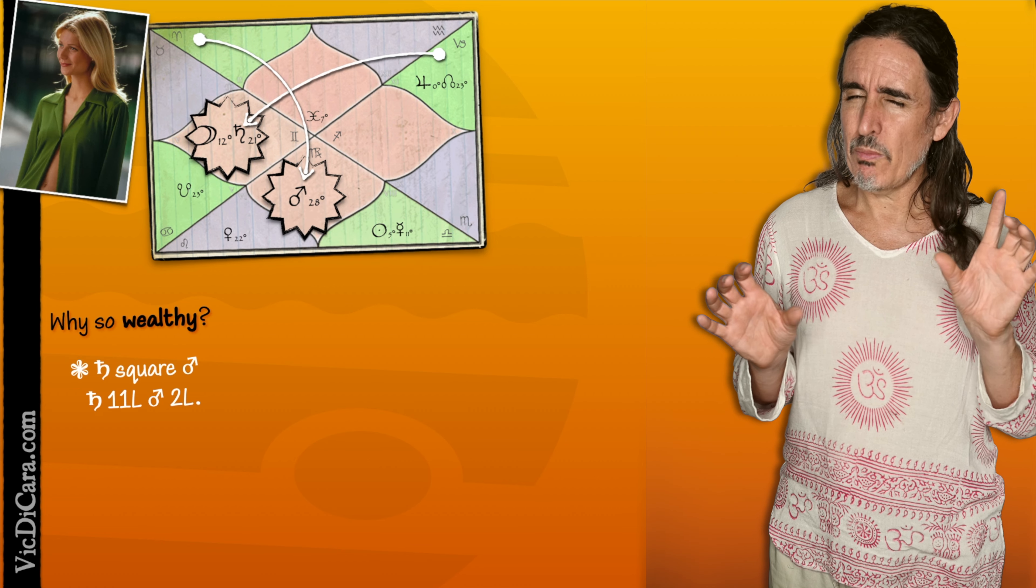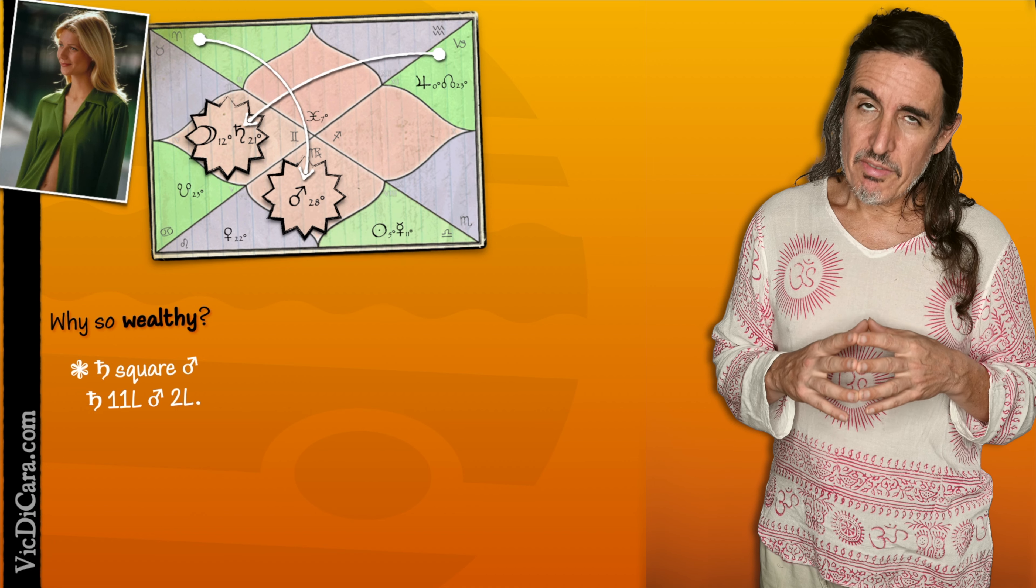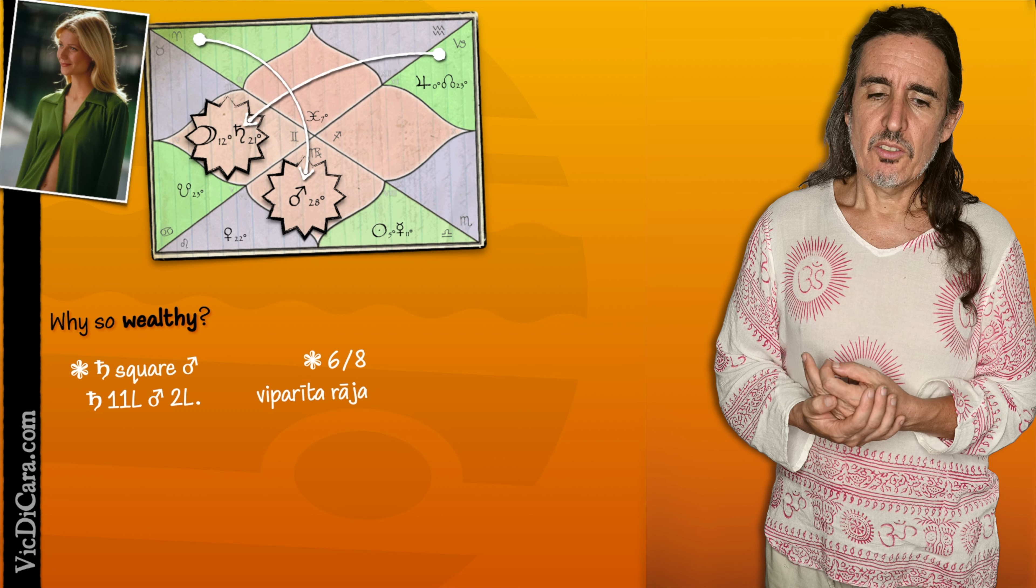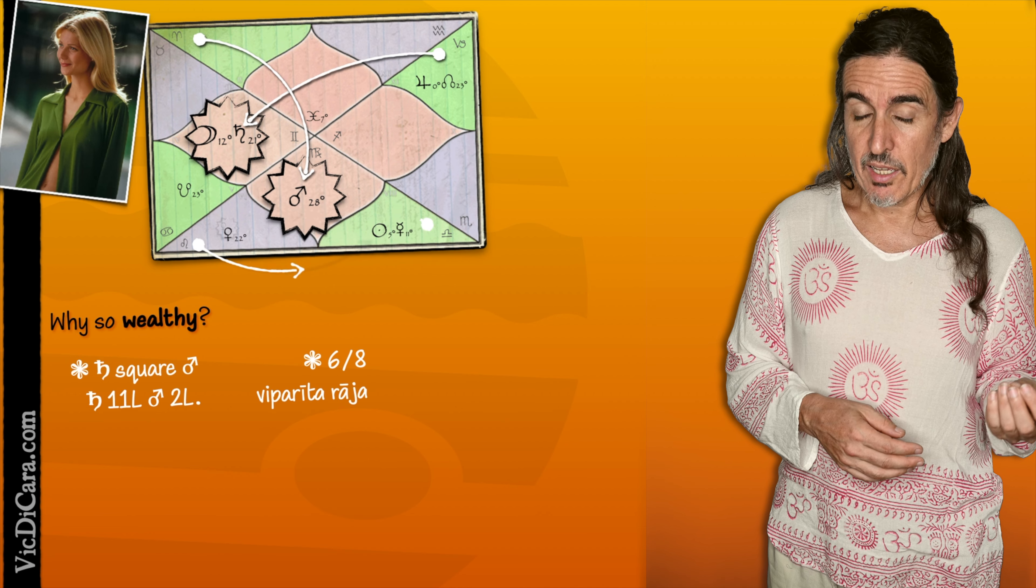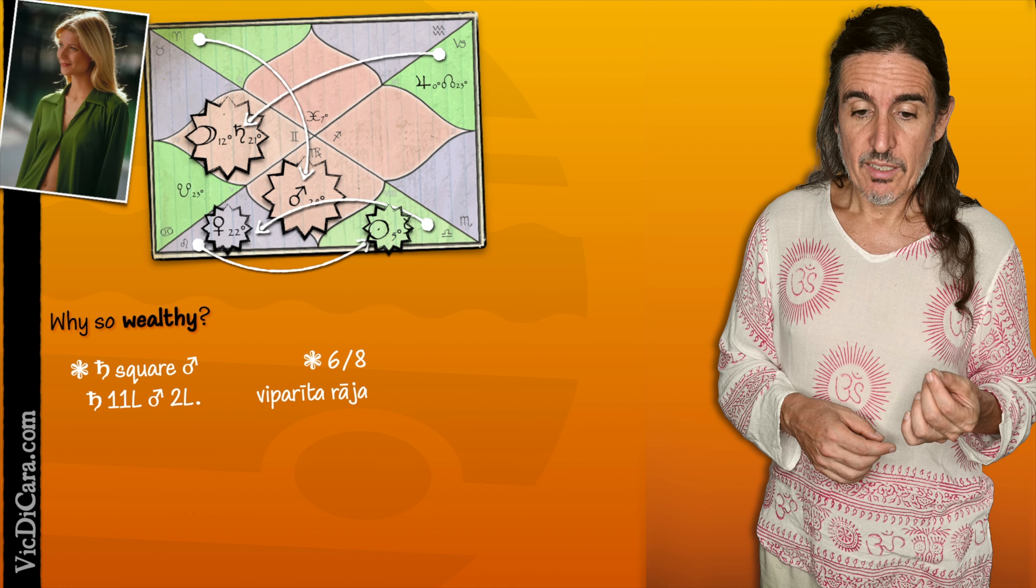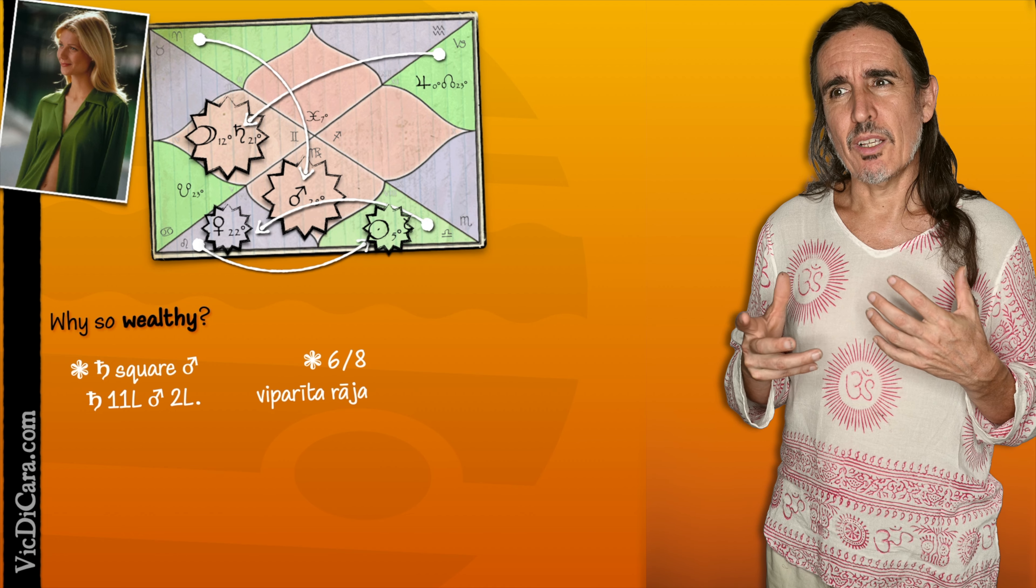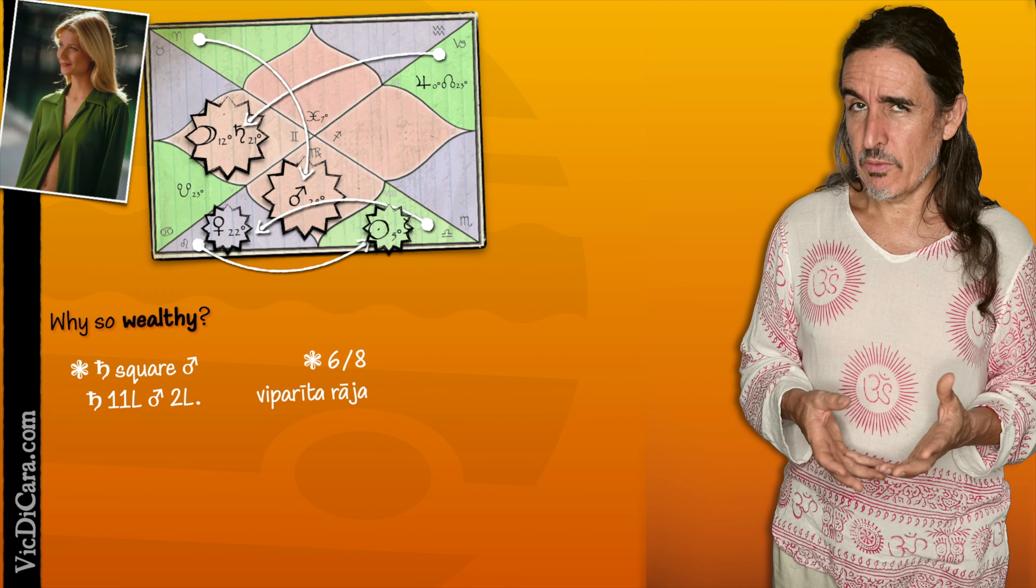So it takes the two most important wealth houses, and puts them in mutual relationship. And then the other thing that she has is something called Viparita Raja Yoga, where the sixth and the eighth houses are joined. So in her case, she has it by a house exchange. The sixth Lord, Sun, has gone to the eighth house, and the eighth Lord, Venus, has gone to the sixth. So that is going to kind of eliminate debts and make it easy to get money. Just like have money come to you instead of having to work for it.